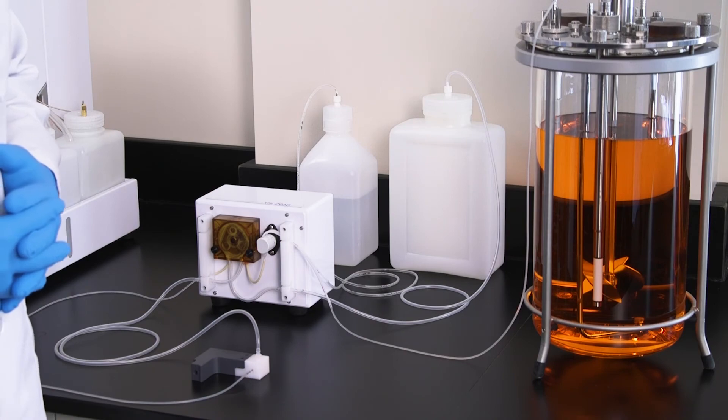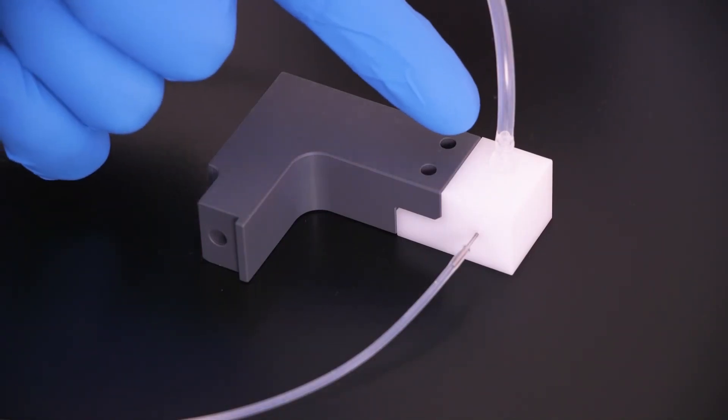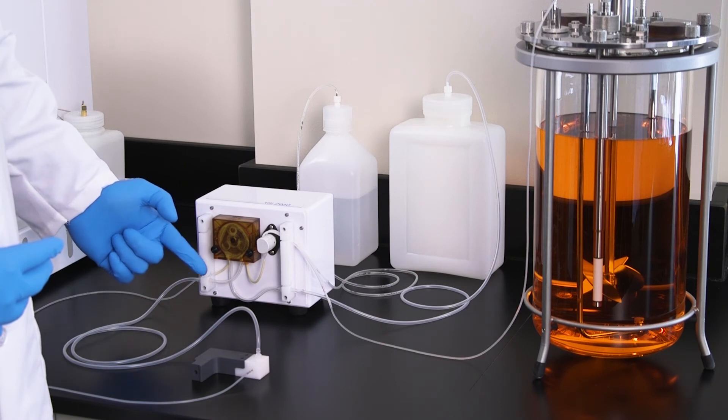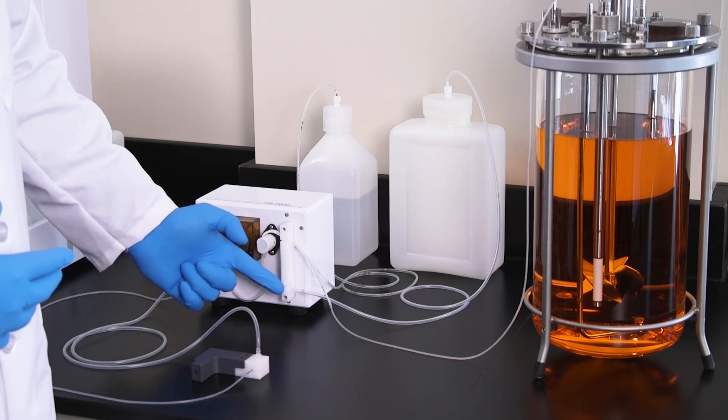The larger diameter tubing should run from the waste outlet of the sample cup, through the front roller of the peristaltic pump, and onto the connector for the waste bottle.